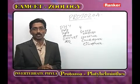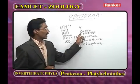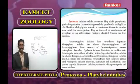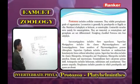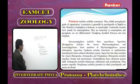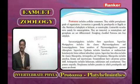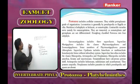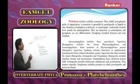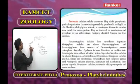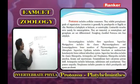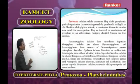Phylum Protozoa was classified by Honigsborg. The first subphylum Sarcomastigophora is classified into three superclasses: Mastigophora, Opalinata, and Sarcodina.